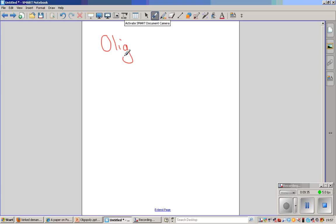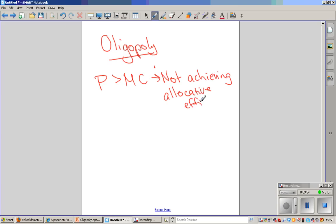In oligopoly, price, as we saw, was greater than marginal cost, so that is not achieving allocative efficiency.